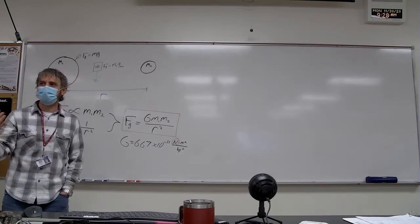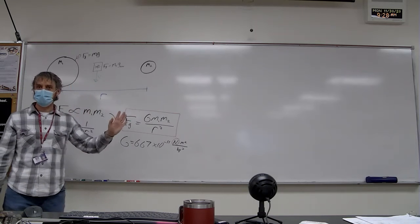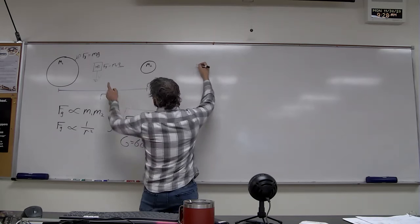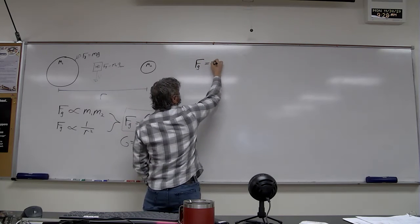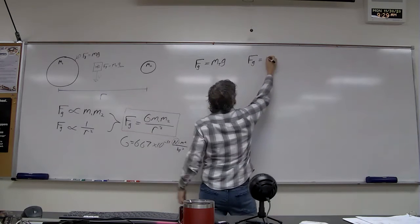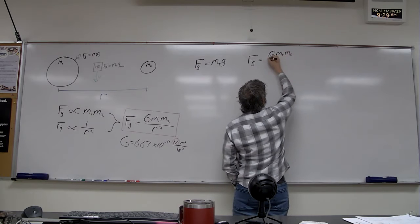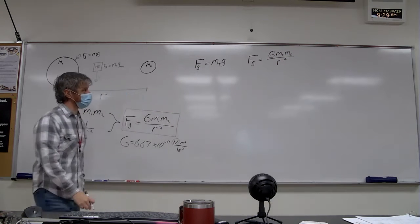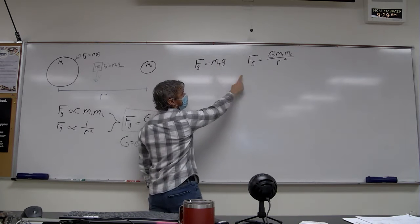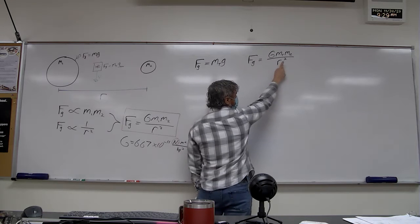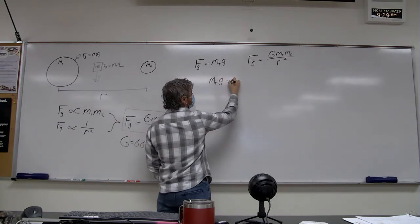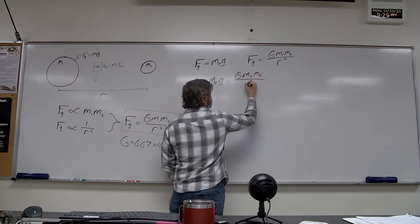We can determine g on the surface of any other object, as long as we know its mass, by combining two equations. I want to determine a value for g at a new location. I can equate the two equations: the mass of Tatum times g equals big G times her mass times the mass of the Earth, divided by her distance from the Earth's center squared. Those are two equations for the same force. Basic logic says if a equals b, and a also equals c, then b must equal c.